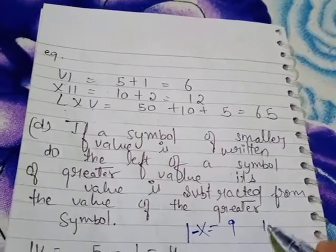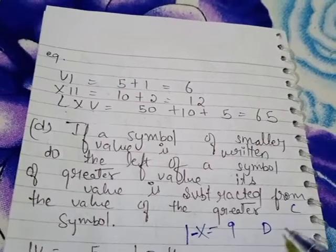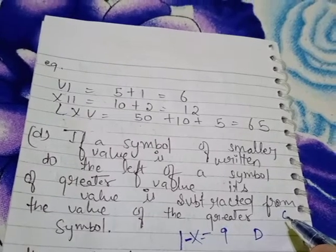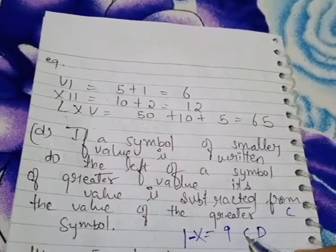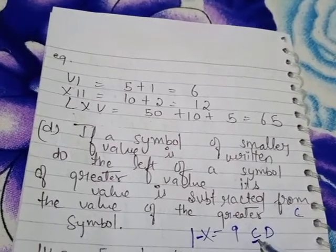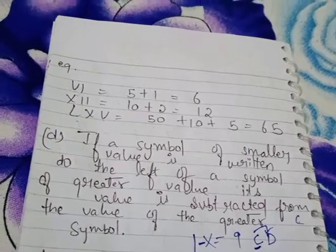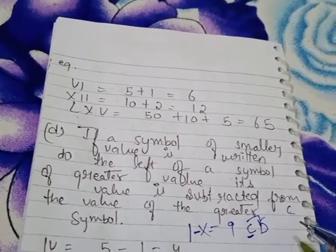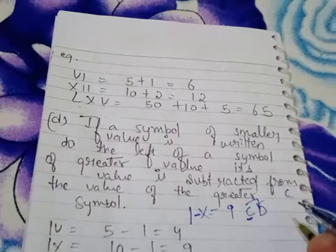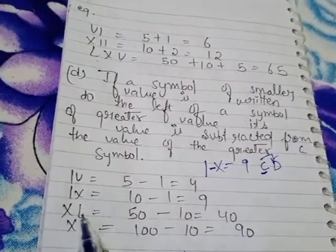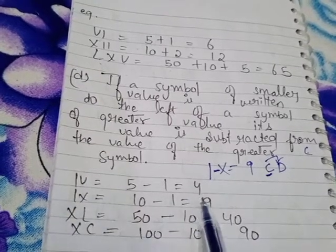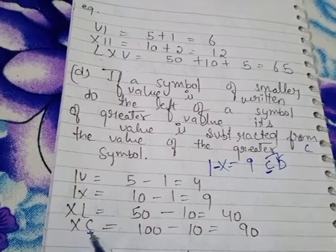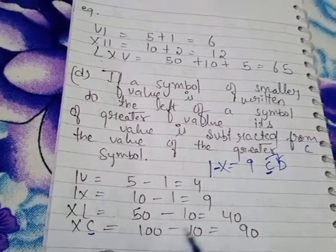Another example: D is 500 and C is 100. C is smaller than D, so when C is written to the left side, it is subtracted — D minus C means 500 minus 100. Any smaller number written to the left side of a greater number is always subtracted from that number. For example, XI with I on the left means X minus 1.